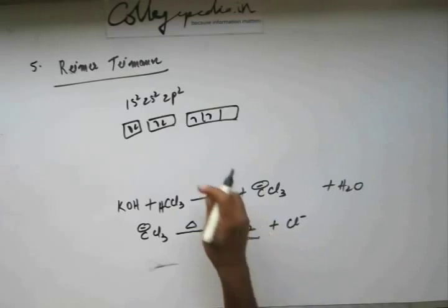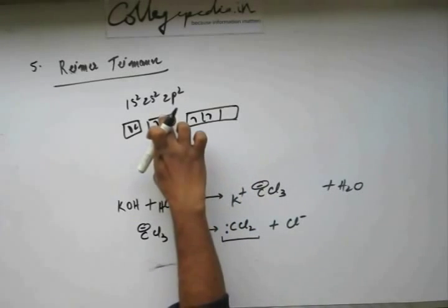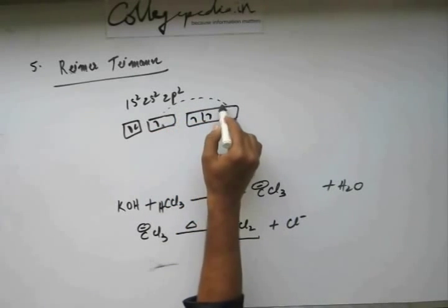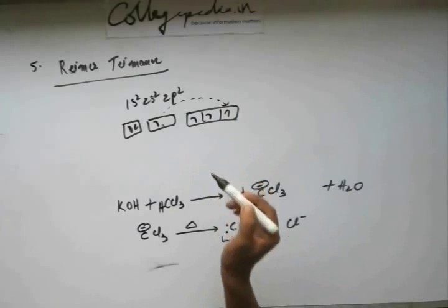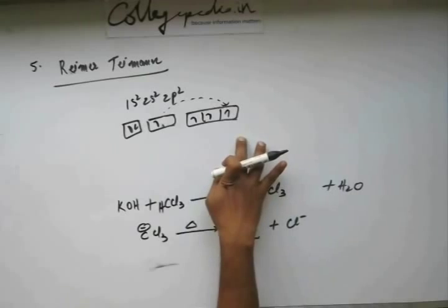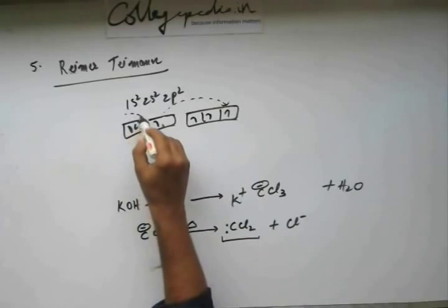Here we can see 2 unpaired electrons. For making 4 bonds, there has to be 4 unpaired electrons, so the electron from here shifts into a higher orbital, 2p, from 2s to 2p. So now there are 4 unpaired electrons, now this is inertial, this belongs to 1s.